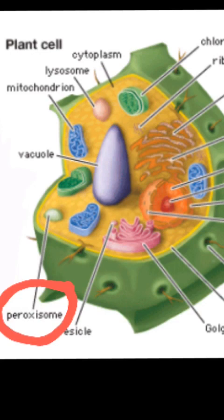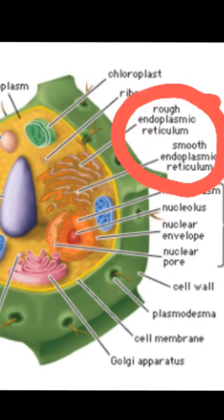Peroxisome performs metabolic functions impacting regulations. Smooth endoplasmic reticulum makes cellular products like lipids and hormones for those cells to have better growth.